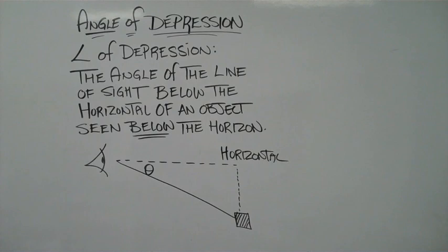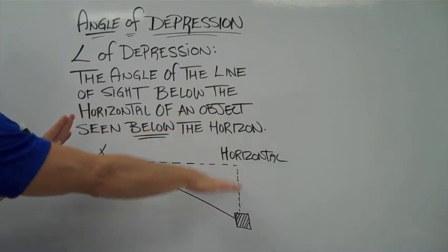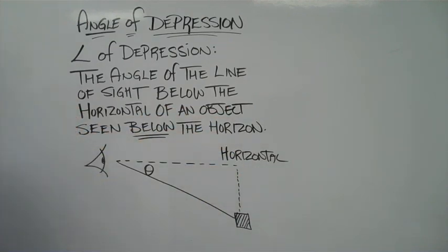Conversely, the angle of depression is the angle of the line of sight below the horizontal of an object below the horizon. So if here is our horizon and we're looking down at something below the horizon, then the angle at which we look compared to the horizontal is the angle of depression.